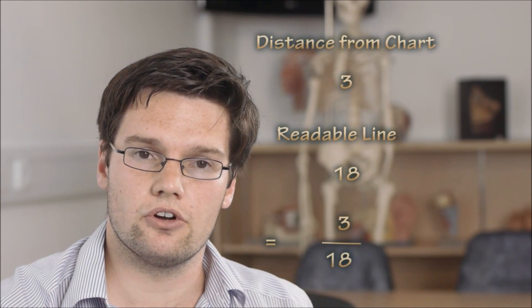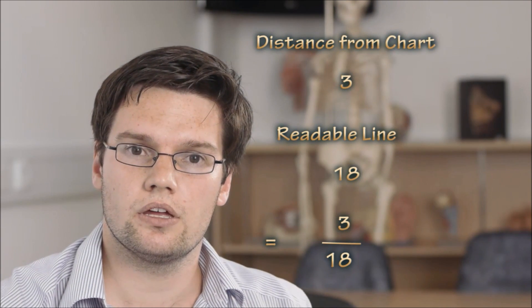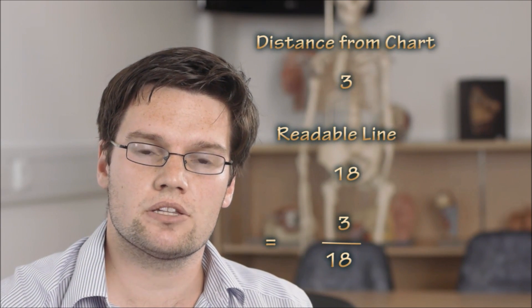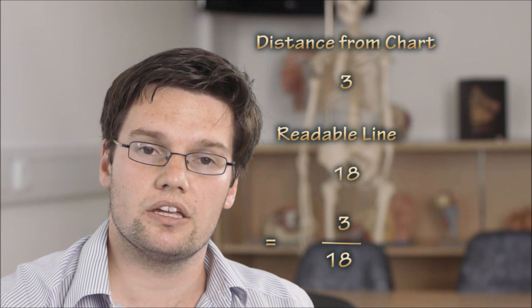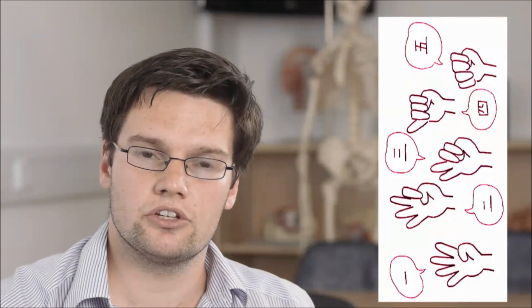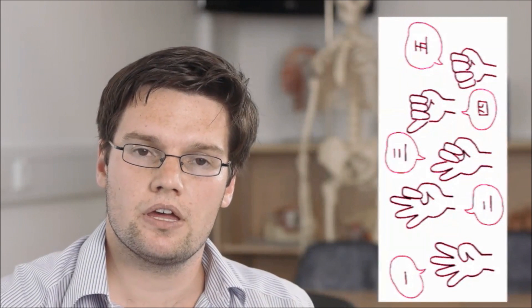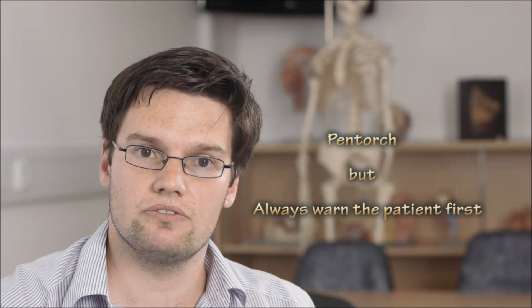Normal vision is 6 over 6. If the patient can't read any of the lines, you get them to stand 3 metres from the chart — the vision would then be described as 3 over something. If they still can't read any lines, you get them to count the number of fingers that you hold in front of their eyes. If they can't do that still, you shine the pen torch in their eyes and see if they can perceive light at all.